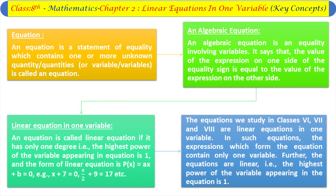Let us discuss the important useful tips of this chapter. An equation is a statement of equality which contains one or more unknown quantities. An algebraic equation is an equality involving variables — it says that the value of the expression on one side of the equality sign is equal to the value of the expression on the other side.